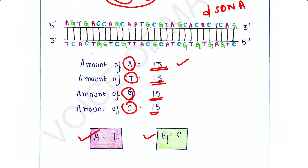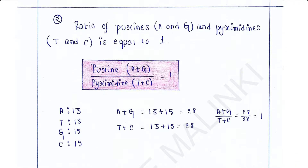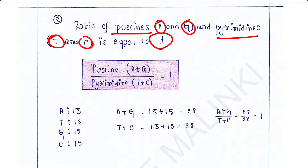Now let's see the second rule. The ratio of purines to pyrimidines is equal to 1. Adenine and guanine are purines, while thymine and cytosine are pyrimidines. So the ratio means purines divided by pyrimidines equals 1 — that is (A + G) divided by (T + C) equals 1.